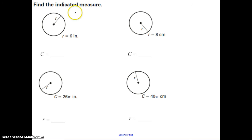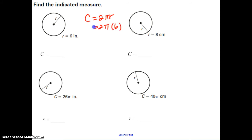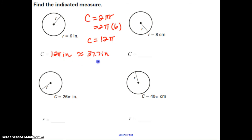Let's do some practice. In this problem, you're given a circle with a radius of 6 inches and you need to find the circumference. Using the formula C = 2πr, substitute in the radius of 6: circumference equals 2 times 6 is 12 times pi. Pi is approximately 3.14, so you can give your answer as 12π inches or multiply it out to get approximately 37.7 inches. Either answer is acceptable.